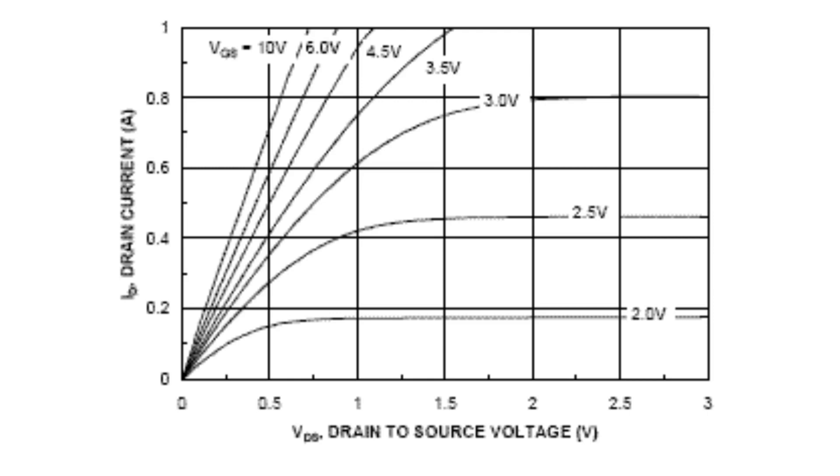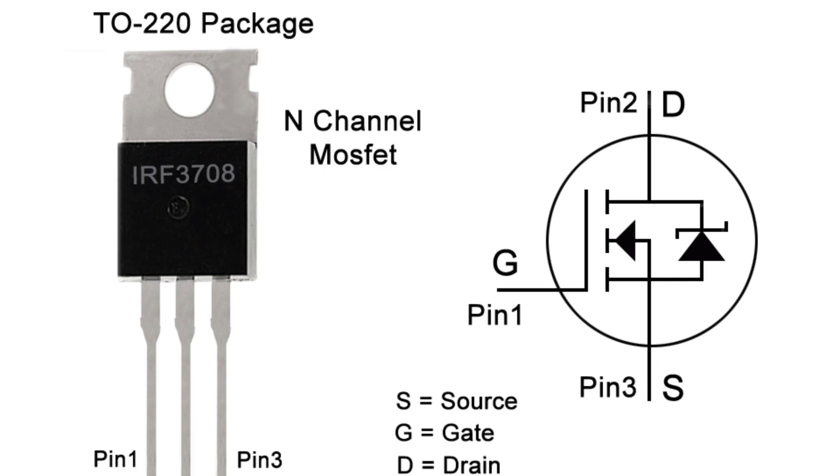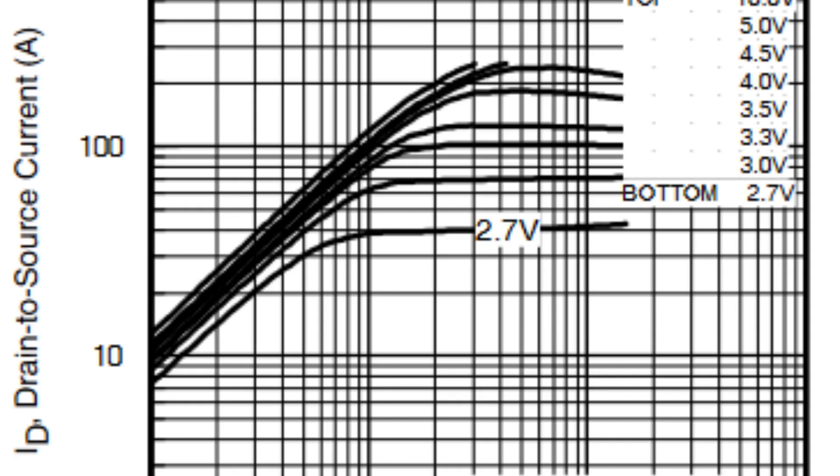For the example of the IRF3708 PBF, notice how at an ID of 10 amps, the voltage drop is barely above 0.1 V with a 3.3 V gate drive, and one can barely tell the lines for 3.3 V and higher voltages apart.